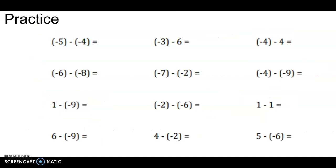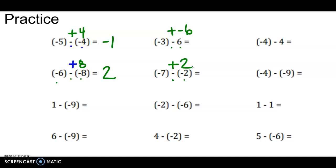Here's practice with no number line — just ready to do the problems and keep going. You need to rewrite them as addition. Instead of taking away sandbags, I'm adding balloons — then negative 5 and 4, signs are different, the negative is bigger by 1. Instead of taking away sandbags, I'm going to add balloons — negative and a positive, signs are different, the positive is bigger by 2. Instead of taking away balloons, I'm going to add sandbags. Instead of taking away sandbags, I'm going to add balloons. Pause here, work all of these out, then play when you're ready to check.